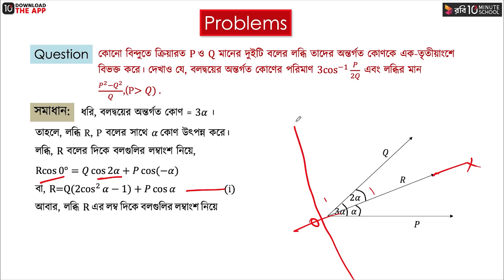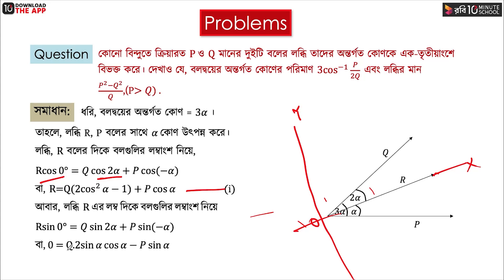Y is equal to a. This is how we are going to look at R. So this is r sin 0 degree. Q sin 2α is equal to minus alpha. So this is p sin minus alpha. We know sin 0 degree is equal to 0. And q sin 2α is equal to 2 sin alpha. And sin minus alpha means minus sin alpha.